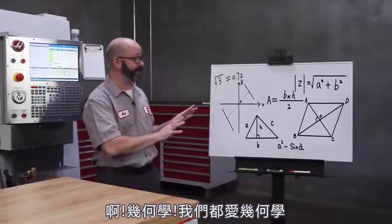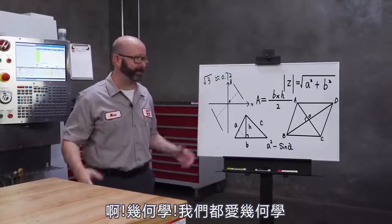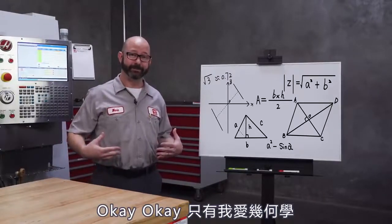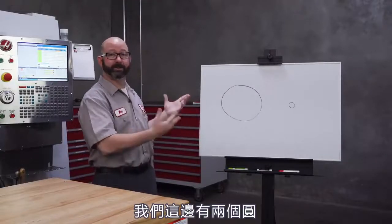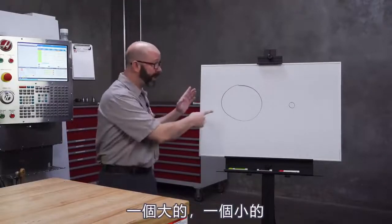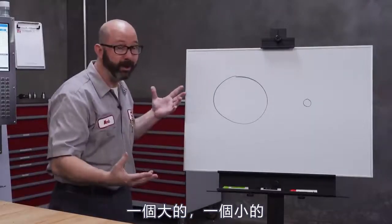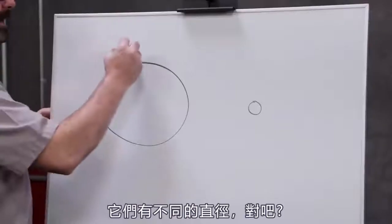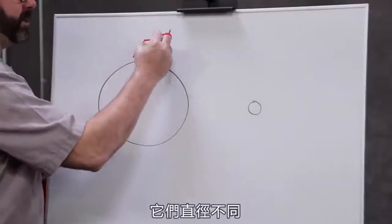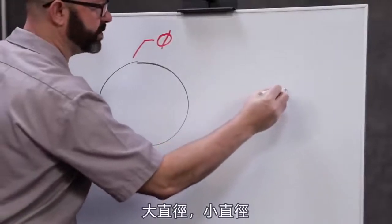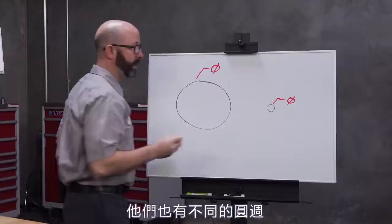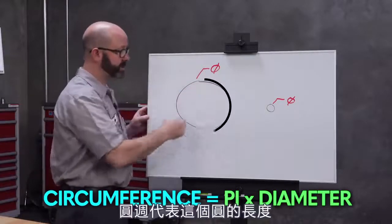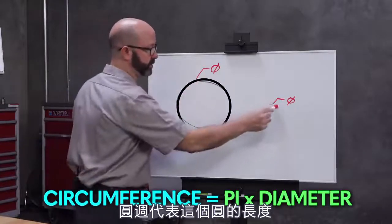Geometry! We all love geometry. So what we've got here are two circles, one big and one small. Now they've got different size diameters — big diameter, small diameter — and they also have different circumferences, the distance around those circles.